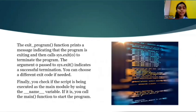Exit program function prints a message indicating that the program is exiting and then calls system exit 0 to terminate the program. The argument 0 passed to system exit indicates a successful termination. You can choose a different exit code if needed.